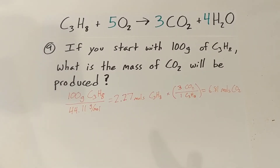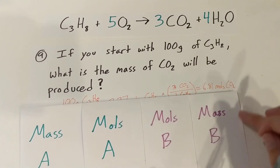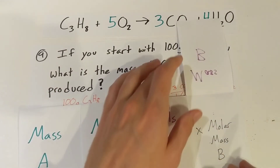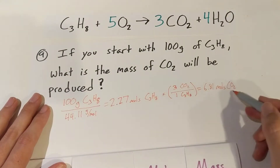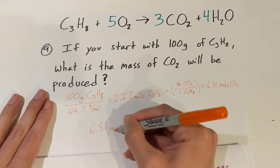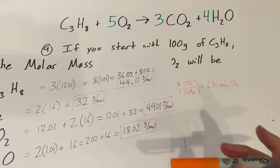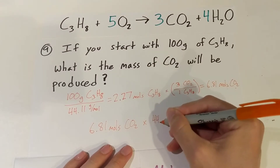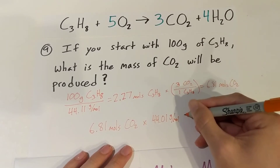We're not there yet — that's moles of carbon dioxide, so we still have to find our mass. We've got our moles of carbon dioxide, now we need to find the mass of carbon dioxide. Last step: multiply by our molar mass. In this case we multiply by the molar mass of carbon dioxide — not propane — because that's what we're working with now. So: 6.81 moles of carbon dioxide times 44.01 grams per mole.